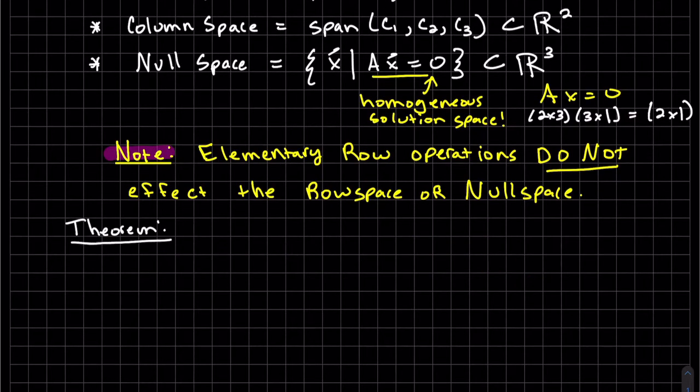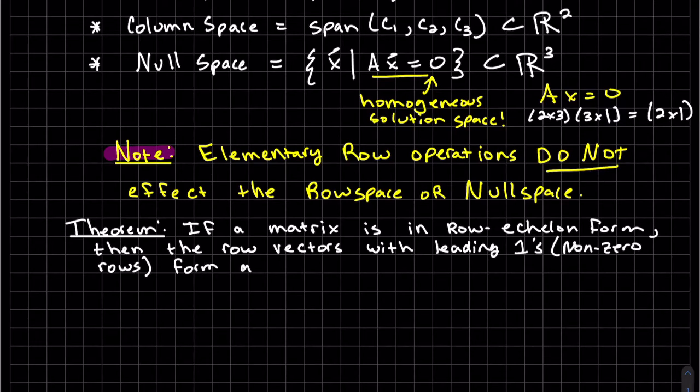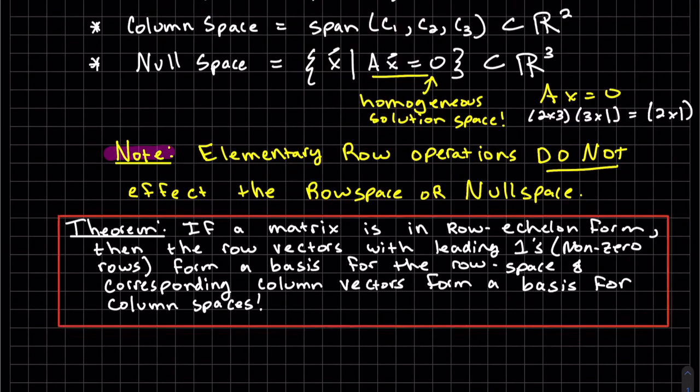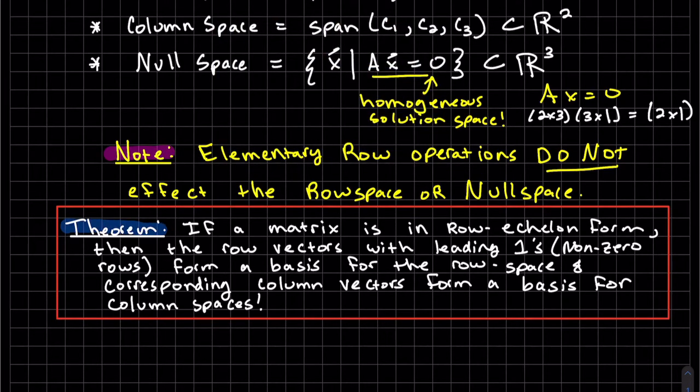Here's a theorem. So what this theorem says, if a matrix is in row echelon form, so we reduce it as much as we can using row operations, then the row vectors, so the rows that have leading ones, those are the non-zero rows, form a basis for the row space. And then the corresponding column vectors form a basis for the column space. You have to use the original columns of matrix A, though, for the column spaces.